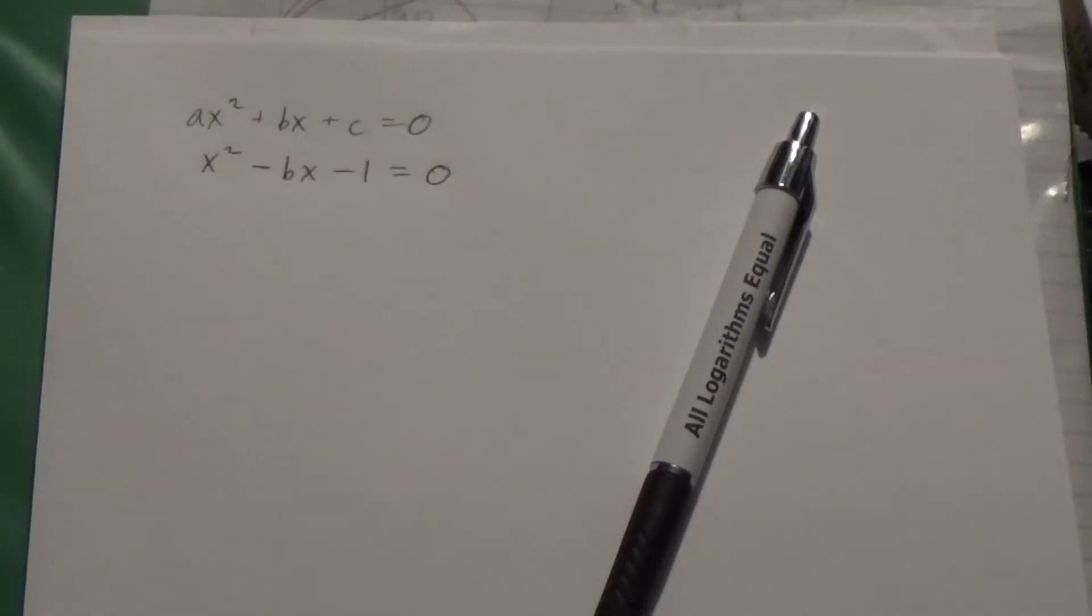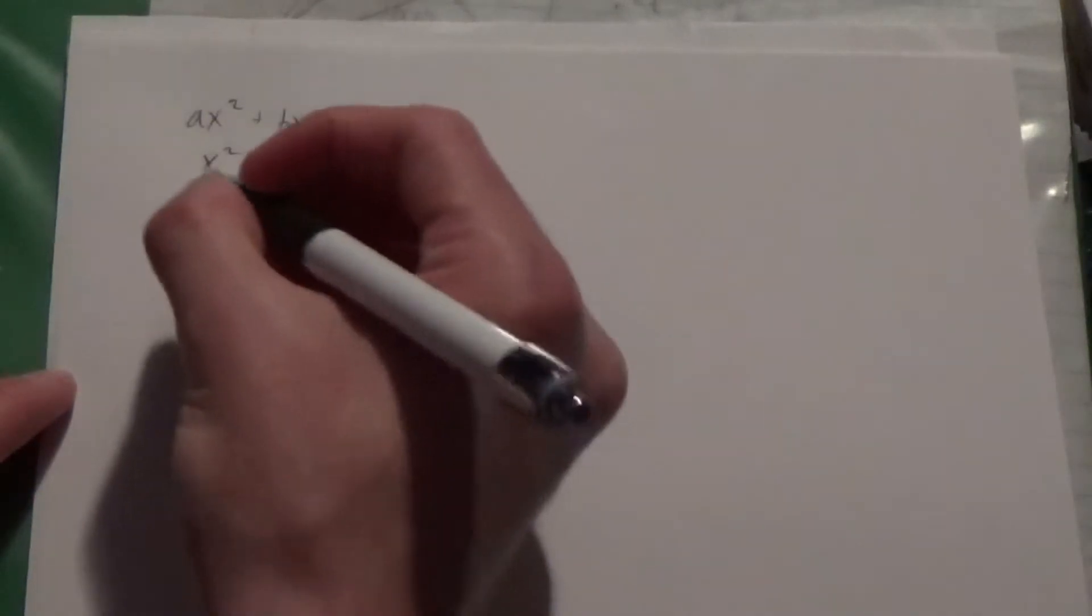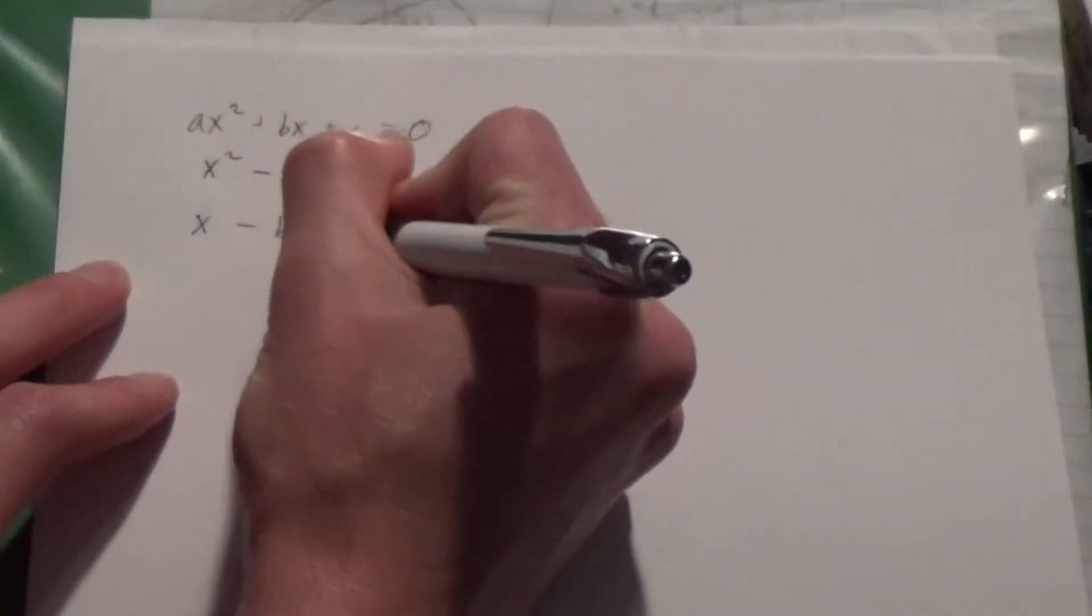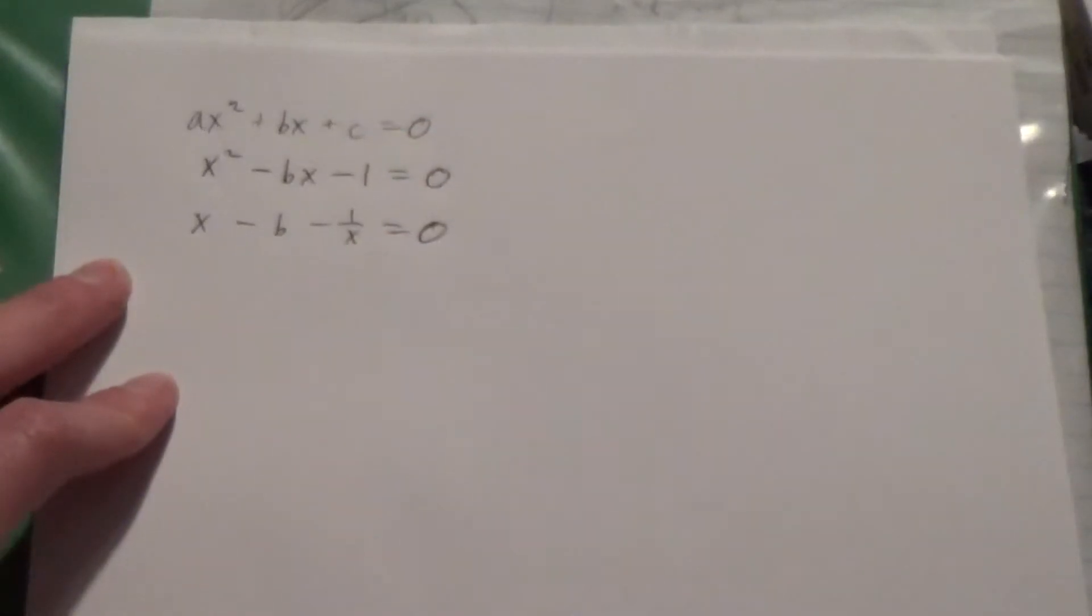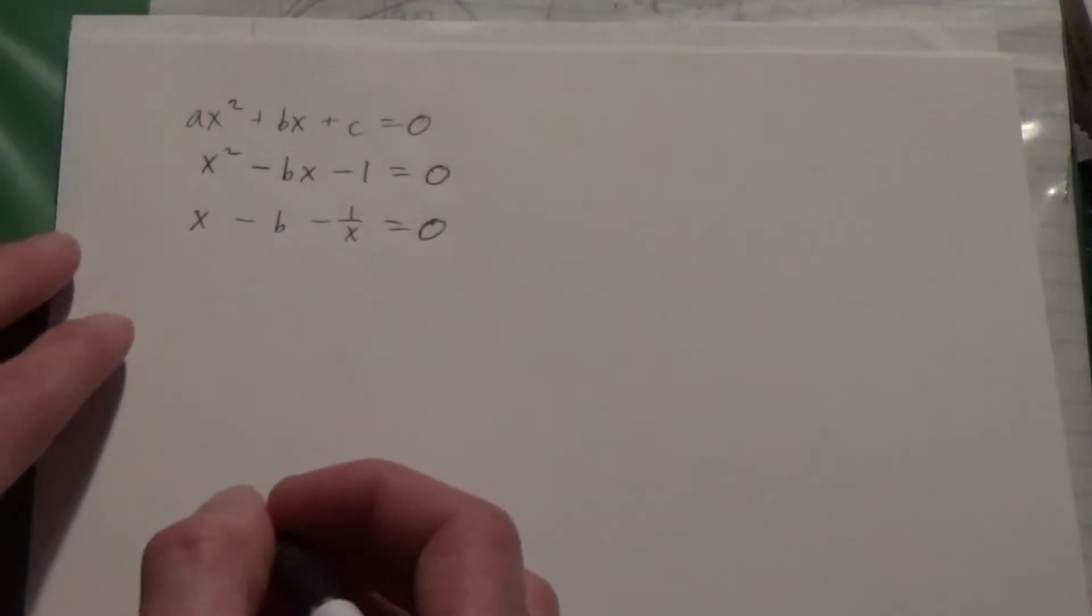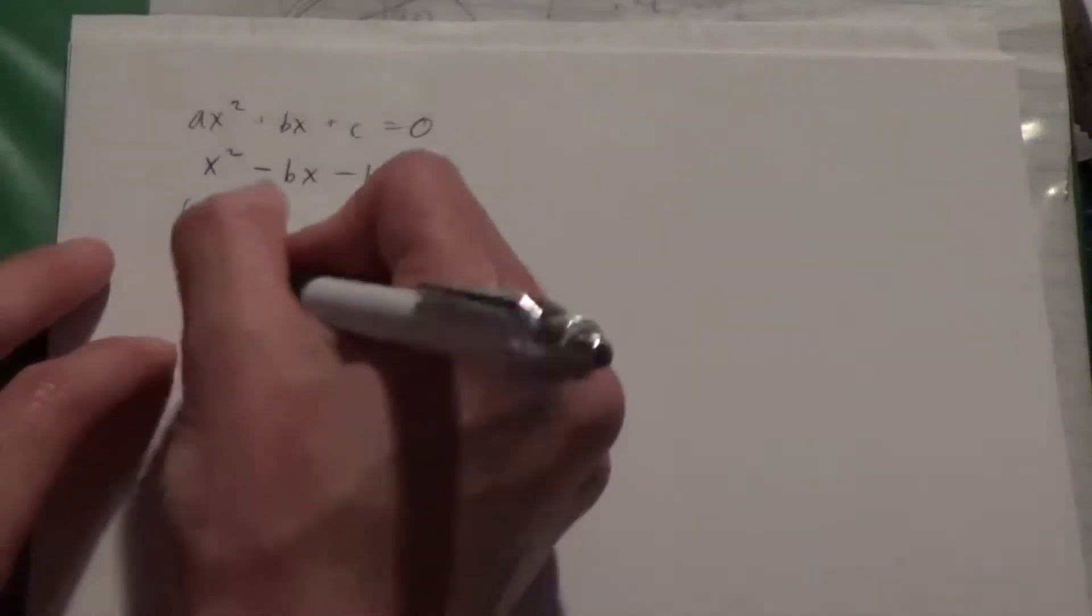If we were to solve for x in this particular case, one way of doing so would, in fact, be to divide each side of this equation by x. It might sound a little strange, but in other words, what we can do is say x minus b minus 1 over x equals 0. Simply by dividing each term by a value of x. And then we can isolate this one variable x on the left, and we end up with x equals b plus 1 over x.